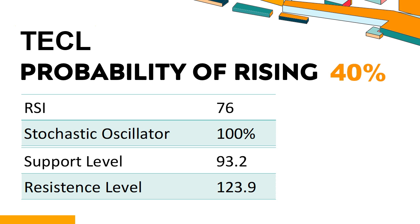The current stochastic oscillator of TECL is 100%. When the stochastic oscillator rises above the 80 level, it is usually considered overbought, indicating that the stock may be due for a price pullback. An overbought condition occurs when a stock's price rises too fast and too high in a short period of time and can be a sign that buying pressure has exhausted. TECL has a 40% probability of rising stock price. When the probability of rising is lower than 50%, the probability of falling is relatively high. Combining multiple indicators, TECL has four bullish signals and three bearish signals.